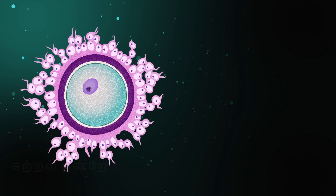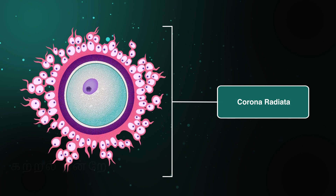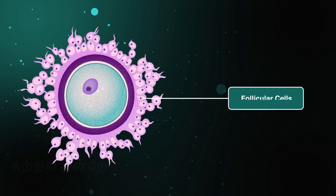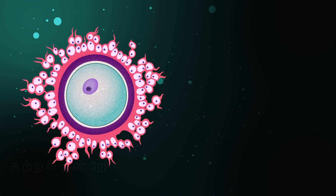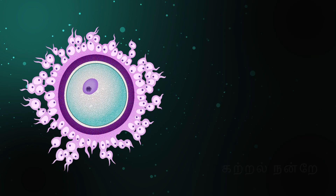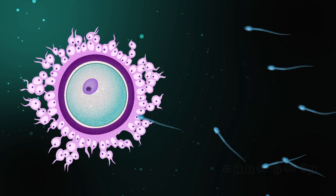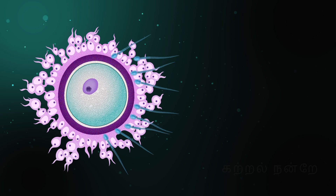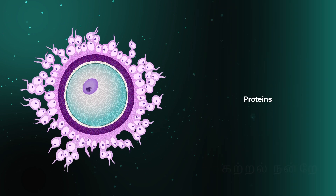The outermost layer surrounding all the organelles of the ovum is called the corona radiata. This layer is made of two or three layers of follicular cells arranged around the ovum in a crown-like structure, which is why it is named corona radiata. Corona radiata releases chemical attractants that help guide sperm cells towards the ovum. In addition, it also supplies the ovum with essential proteins needed for its development.